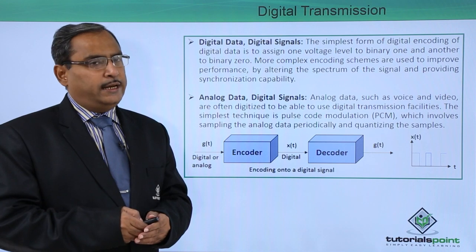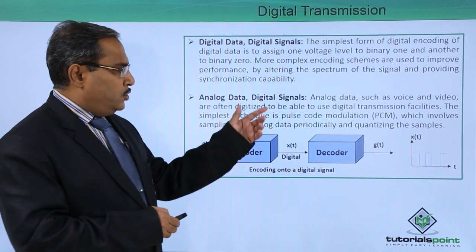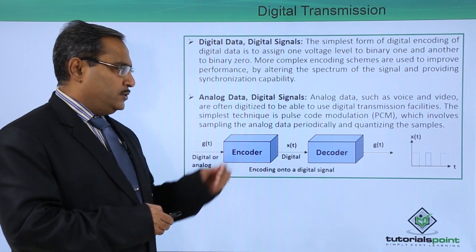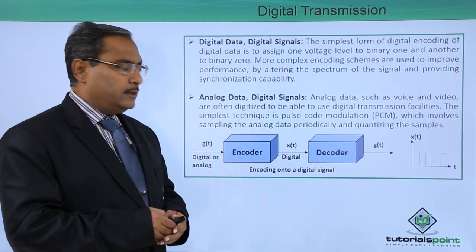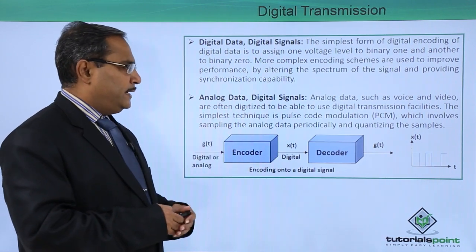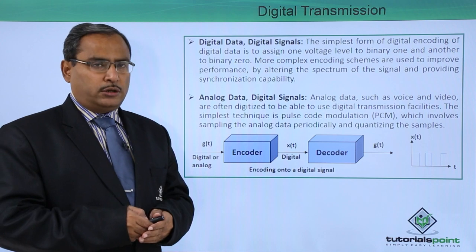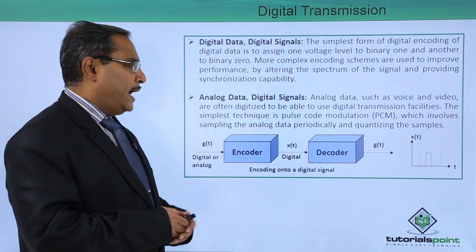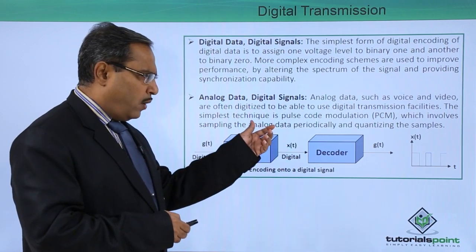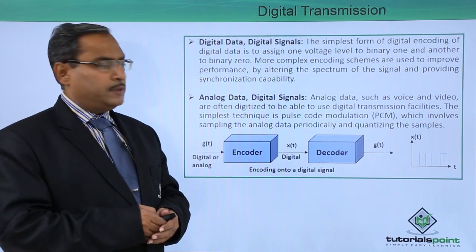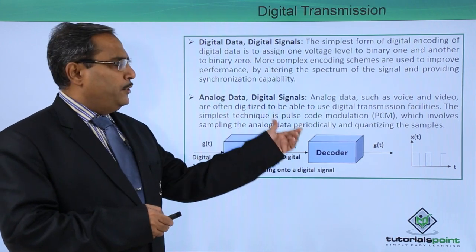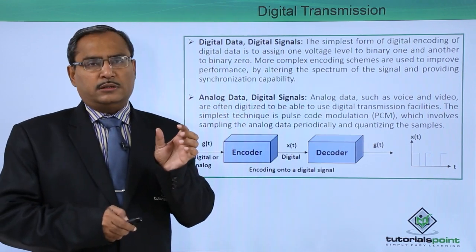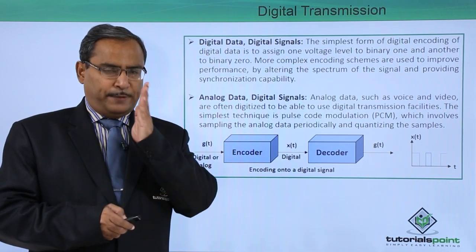The next category is analog data and digital signals. Analog data such as voice and video are often digitized to be able to use digital transmission facilities. The simplest technique is pulse code modulation — PCM — which involves sampling the analog data periodically and quantizing the samples. Here, the analog data will be periodically checked after each and every time period.